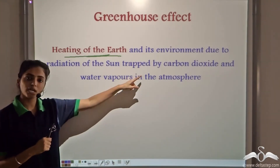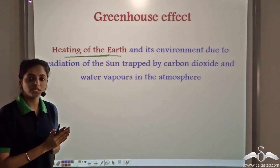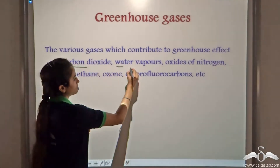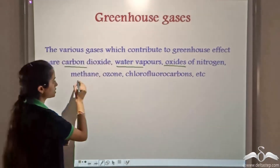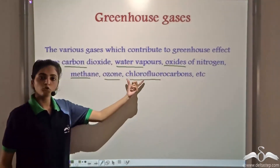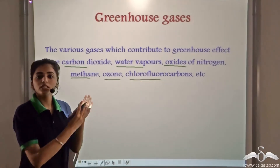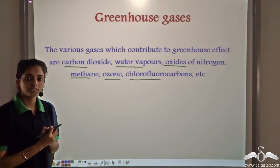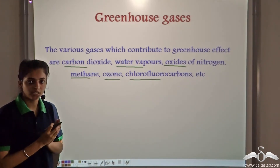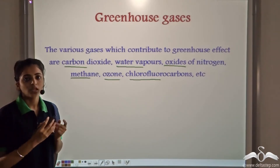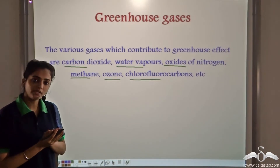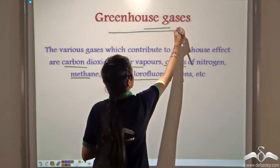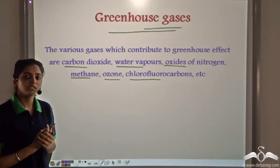Along with carbon dioxide and water vapours, there are some other gases like oxides of nitrogen, methane, ozone, and chlorofluorocarbons, also known as CFCs. They also help in the absorption of radiation, and these gases which help in the absorption of sun's radiation are known as greenhouse gases, as they contribute towards the greenhouse effect.